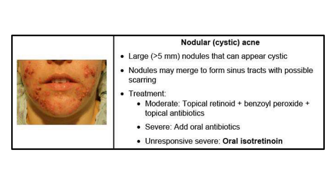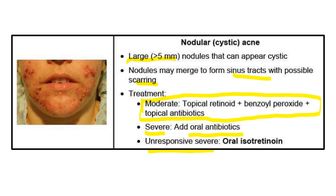Nodular or cystic acne consists of large nodules greater than 5 mm that can appear cystic. Nodules can merge to form sinus tracts with possible scarring. For moderate nodular acne, we give all three topical agents. For severe cases, we add oral antibiotics. For unresponsive cases, we add oral isotretinoin. Before prescribing oral isotretinoin, confirm the patient is not pregnant and that they are using two forms of contraception.